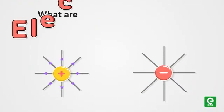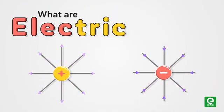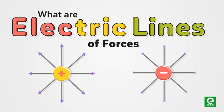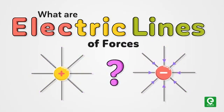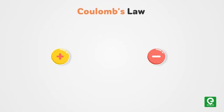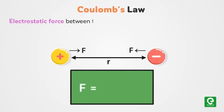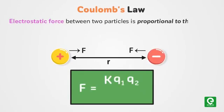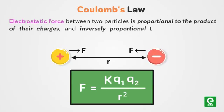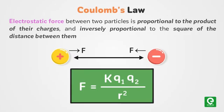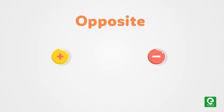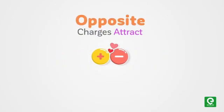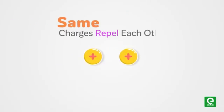What are electric lines of force? Coulomb's law states that the electrostatic force between two particles is proportional to the product of their charges and inversely proportional to the square of the distance between them. Also, we know that opposite charges attract and like charges repel each other. But how do we visualize this?